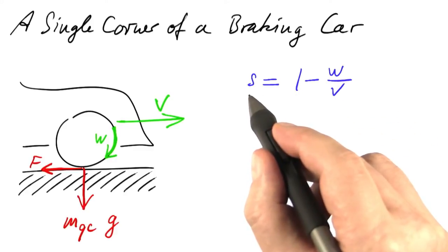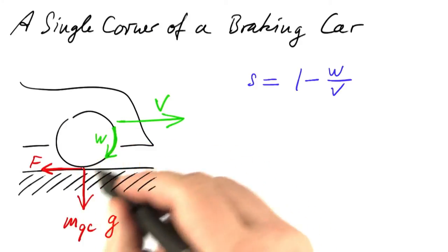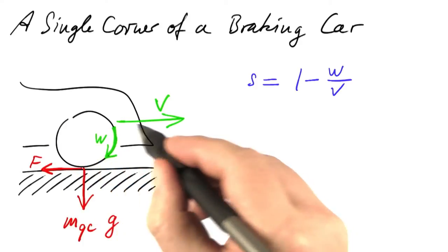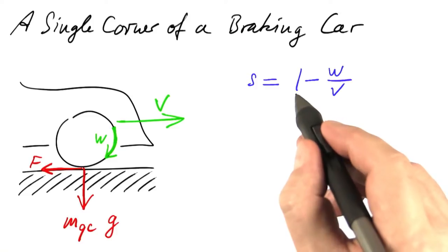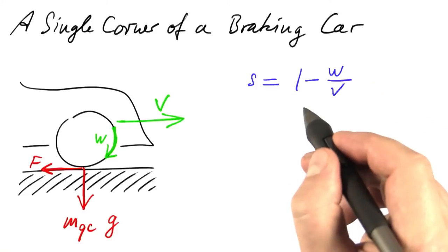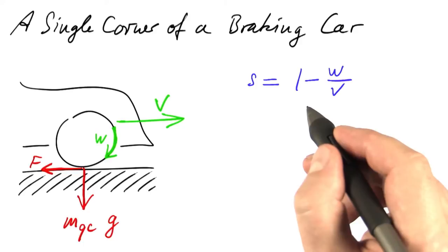If we have a perfectly rolling motion, W will be equal to V, and we compute 1 minus 1 over 1, which is 0. So this seems to be very plausible.